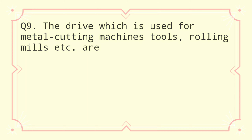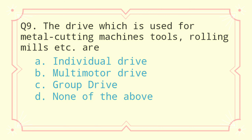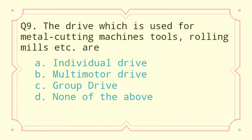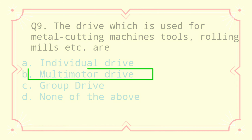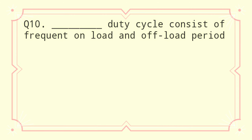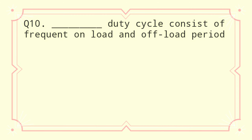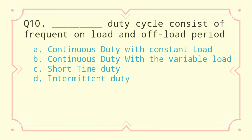Question 9: The drive which is used for metal cutting machines, rolls, rolling mills, etc. is: a) individual drive, b) multi-motor drive, c) group drive, d) none of the above. The correct answer is multi-motor drive.